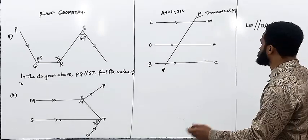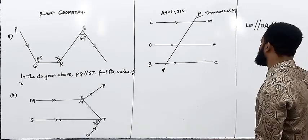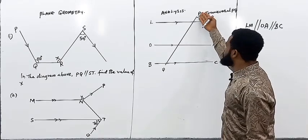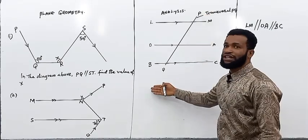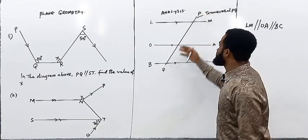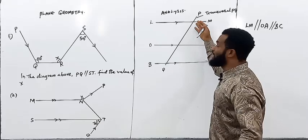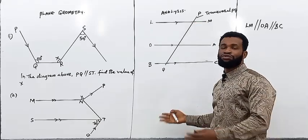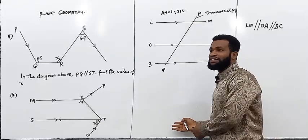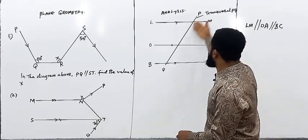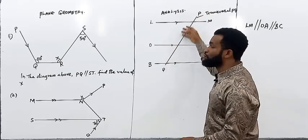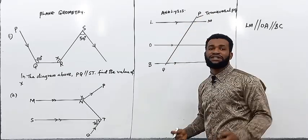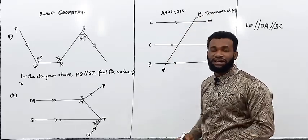Now, there is something we call a transversal. A transversal is simply a straight line joining two or more parallel lines. When we have a straight line joining two or more parallel lines, we say it is a transversal.